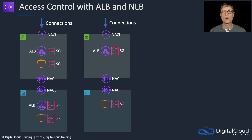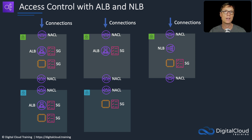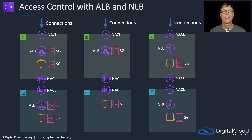Next we have an NLB. Key exam tip: there is no security group with an NLB — the security group is on the EC2 instance only. Connections come in, we can use NACLs, we have a private subnet with a NACL, an NLB, and the EC2 instance with its security group. Remember that NACLs are not stateful, so you need to allow traffic coming in and also allow the return traffic going back out.